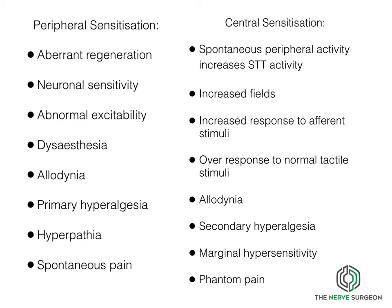Central sensitization is due to the interchange between the axons and connectivity within the synaptic connections within the spinal cord and the brain. There can be increased fields, over-response or hyperstimulation to an afferent stimulus, allodynia, secondary hyperalgesia, and these concepts of marginal hypersensitivity where adjacent areas of the skin also become sensitive even though uninjured, and then autonomy within the somatosensory cortex driving phantom pain.